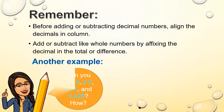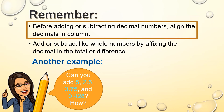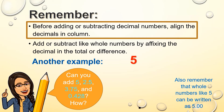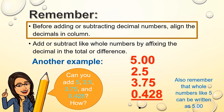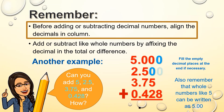Let me show you another example. Can you add: five, two and five tenths, three and seventy-five hundredths, and four hundred twenty-eight thousandths? Remember, you are going to align the decimals in a column. The first number, five, is a whole number with no decimal point — but five can be written as 5.000. Now I'll put in two and five tenths, three and seventy-five hundredths, and four hundred twenty-eight thousandths. Fill the empty decimal places at the end with zeros so all numbers have the same decimal places.